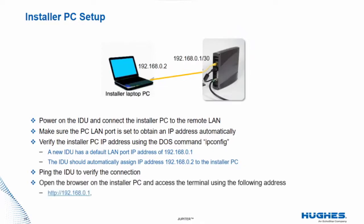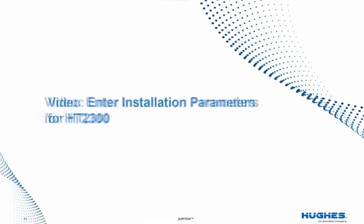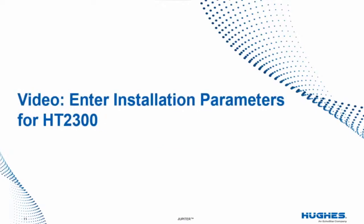Open the browser on the installer PC and access the terminal using the address 192.168.0.1. Here we have a video clip to show you how to enter the installation parameters into the HT2300 terminal.